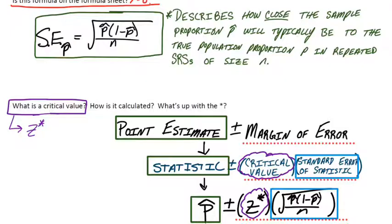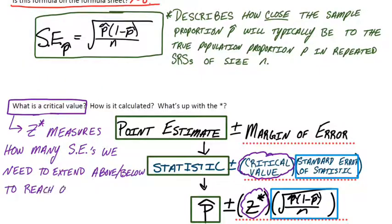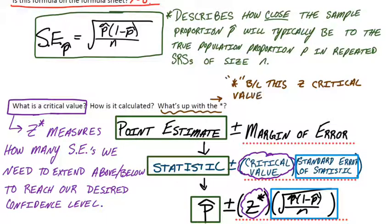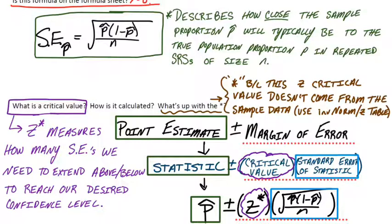So back to the critical value, that z-star. That measures how many standard errors we need to extend our interval above or below to reach our desired confidence level. So if our z-score, our z-star was two, for example, that'd be plus or minus two standard deviations or two standard errors, if you will. And so how is it calculated and what's up with the star? Well, the star means that it's not part of the sample data. It's its own unique thing. So this z critical value doesn't come from the sample data like all the other components do, like the p-hat and the n. We just want to use either inverse norm or the z-table to look up how many standard errors we'd like based on our confidence level.